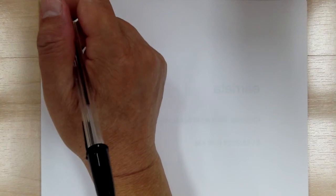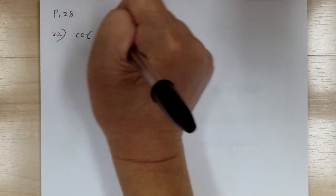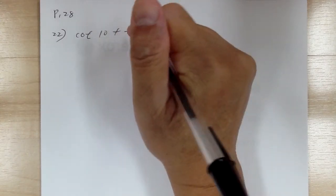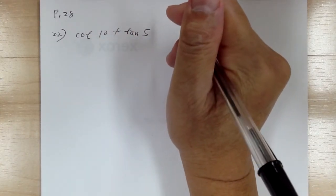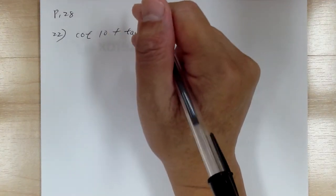Let's go to page 28 and do number 22. Which of the following equals cotangent of 10 plus tangent of 5? It gives you a list. So what we need to do is simplify this and see what we end up with.